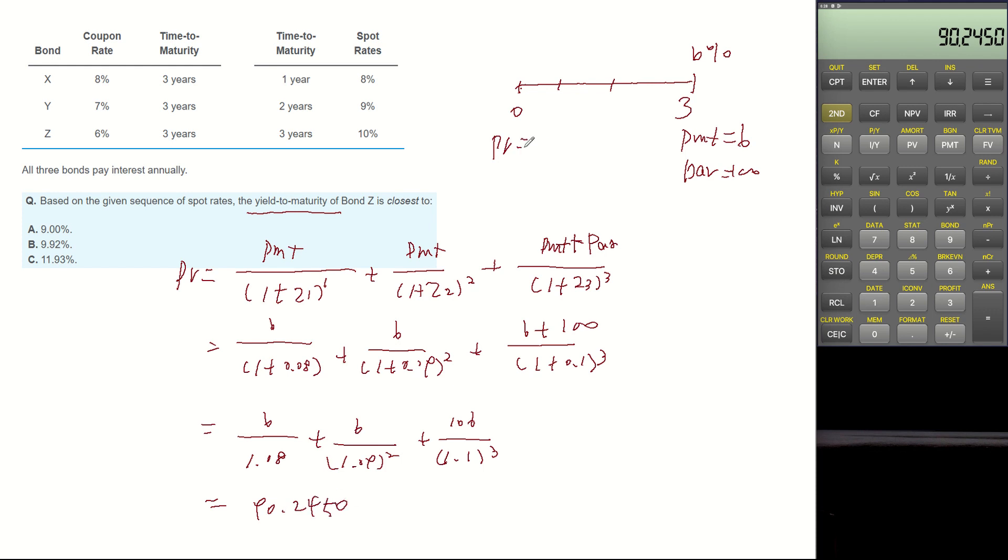Plus recall 2, plus recall 1, then becomes 90.2450. So we know the bond current price is 90.2450, payment is 6, par value is 100, and frequency is 3. Now let's plug these numbers to calculate the yield.